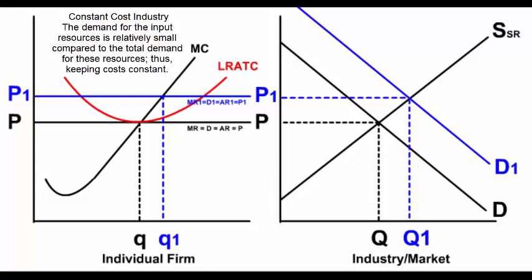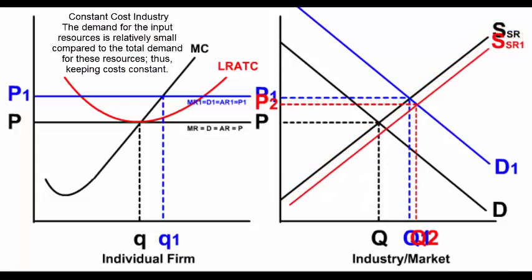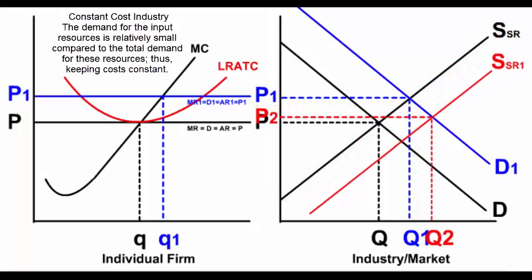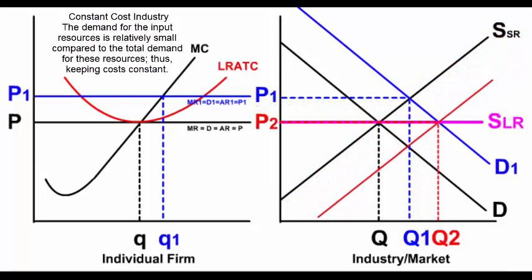As more firms enter the industry, this causes the supply curve to shift to the right, lowering the price in the market and increasing the quantity in the market. The individual firm is a price taker and must take this market price.